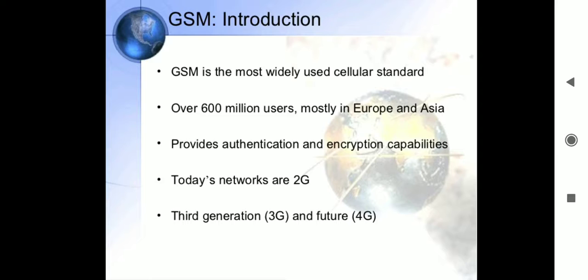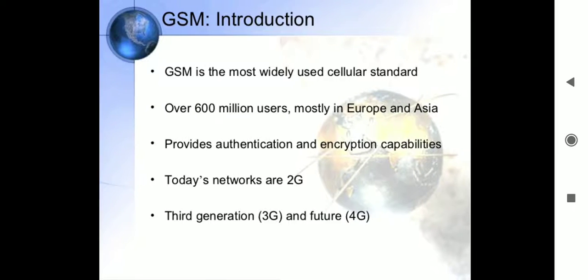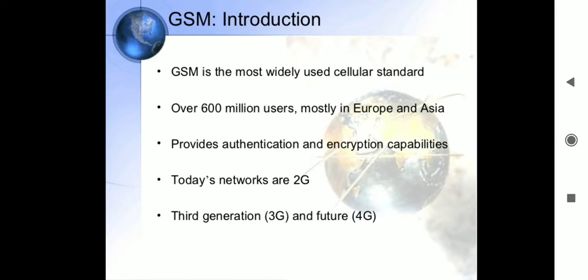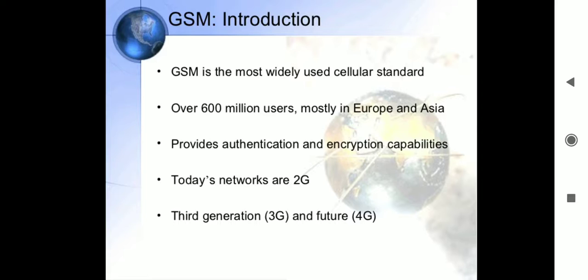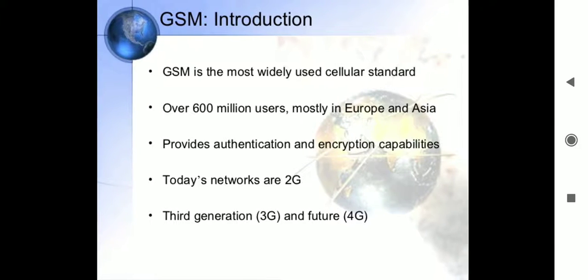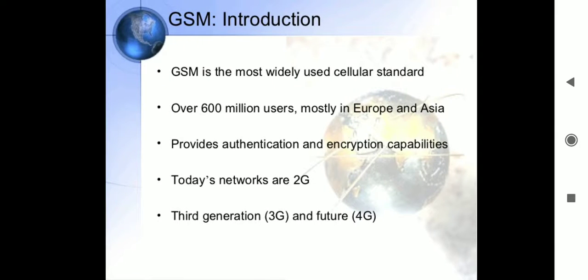The GSM system allows up to 8 to 16 voice users to share each channel, and there may be several radio channels per radio transmission site, meaning cell site. Each coverage area should be a hexagonal cell. GSM was the world's first cellular system to specify digital modulation communication and network level architecture and services.